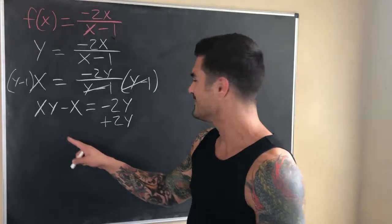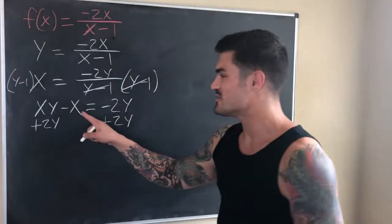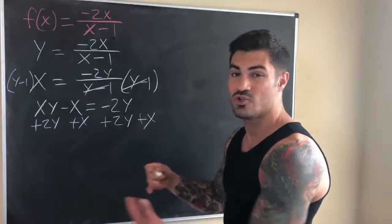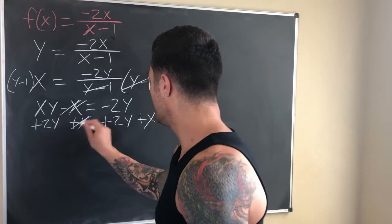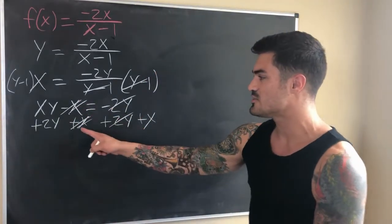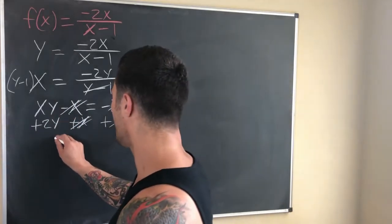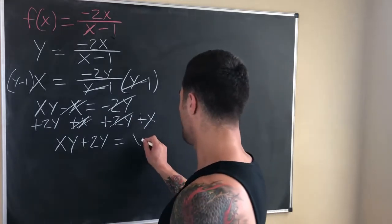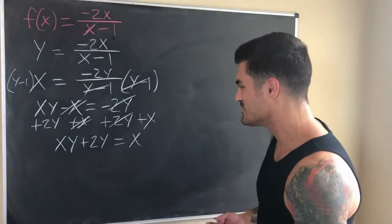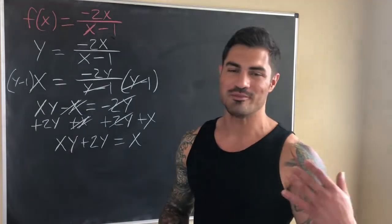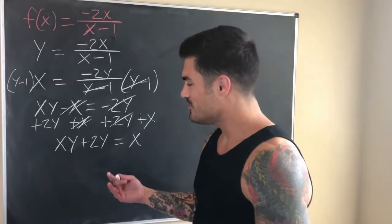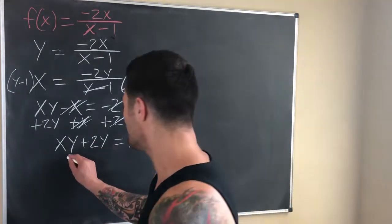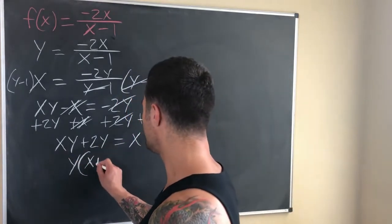I'm going to add 2y to both sides — that term has a y in it, so I'm bringing it over to the left side with the other y term. I'll also add x to both sides — that term has no y, so it moves to the right. Doing both steps at once: the −x and +x cancel, the −2y and +2y cancel, and I'm left with exactly what I wanted: all the y-terms on the left-hand side and all the non-y terms on the right.